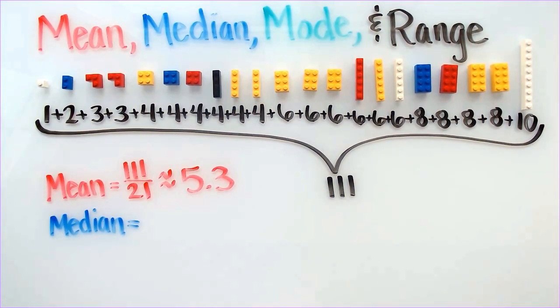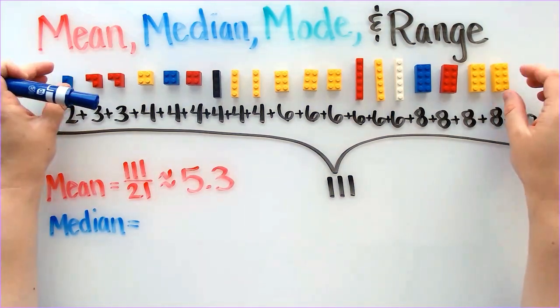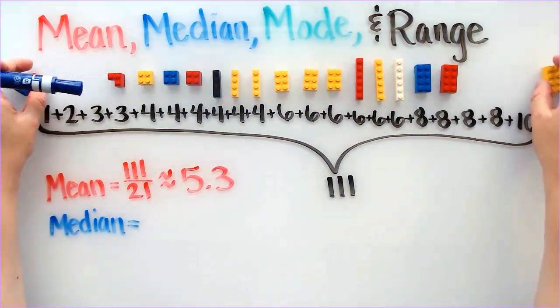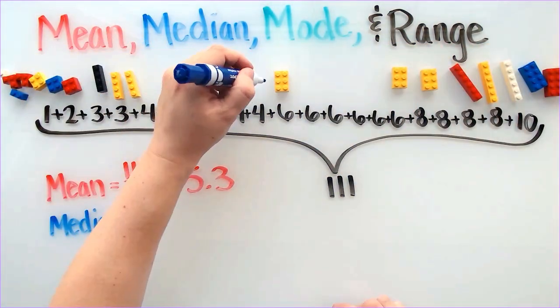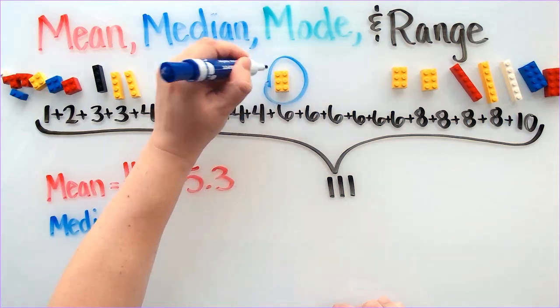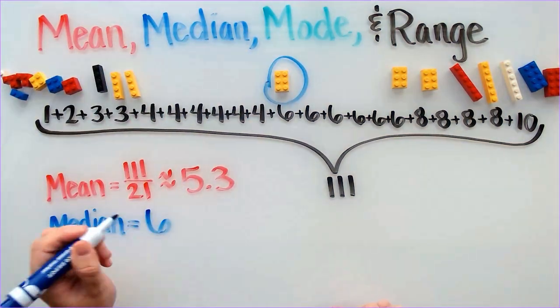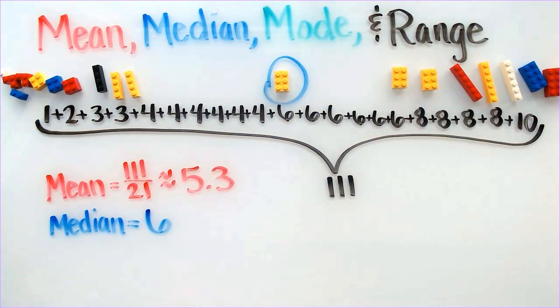For the median, I am removing the Legos starting from the outsides until I get to the middle. I am left with one Lego in the middle. This means that 6 is the median.